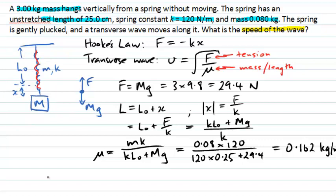And so all that's left to do now is to take my tension in the spring and my mass per unit length of the spring and actually calculate the speed of that transverse wave. So it's going to be that 29.4 as the tension divided by 0.162 as the mass per unit length and take the square root of that and I'll wind up with an answer there of 13.5 and because I've carried my units through in SI units that will be in metres per second.